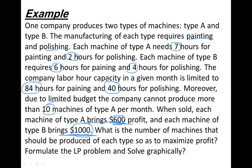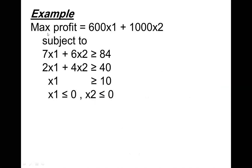Based on this information, the profit objective function equals 600x1 plus 1000x2, where x1 is the number of machines of Type A and x2 is the number of machines of Type B. We have two constraints for the availability of painting and polishing hours, and one constraint for the number of machines of Type A — giving us three structural constraints. To maximize profit subject to these constraints, we have 600x1 plus 1000x2 subject to the constraints.